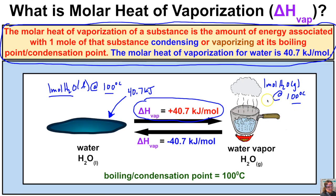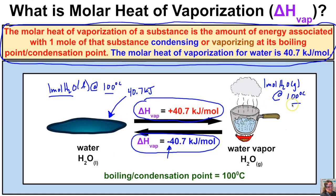The molar heat of vaporization is the amount of thermal energy needed to turn a liquid into a gas. Going the other way, the water vapor will need to release 40.7 kilojoules for every one mole in order to turn back into liquid water at 100 degrees Celsius, with no temperature change. That negative sign indicates energy is being released.